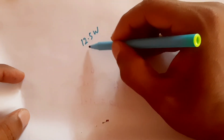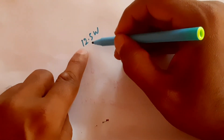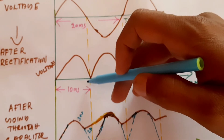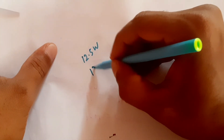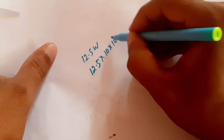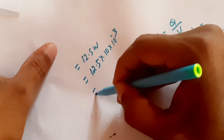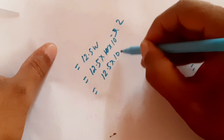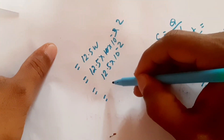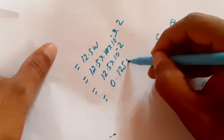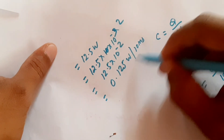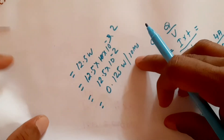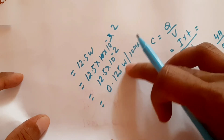For one second, the energy required is 12.5 watts. For 10 milliseconds, it is 12.5 × 10⁻² which equals 0.125 watts per 10 milliseconds. That means the capacitor has to deliver 0.125 watts every 10 milliseconds.